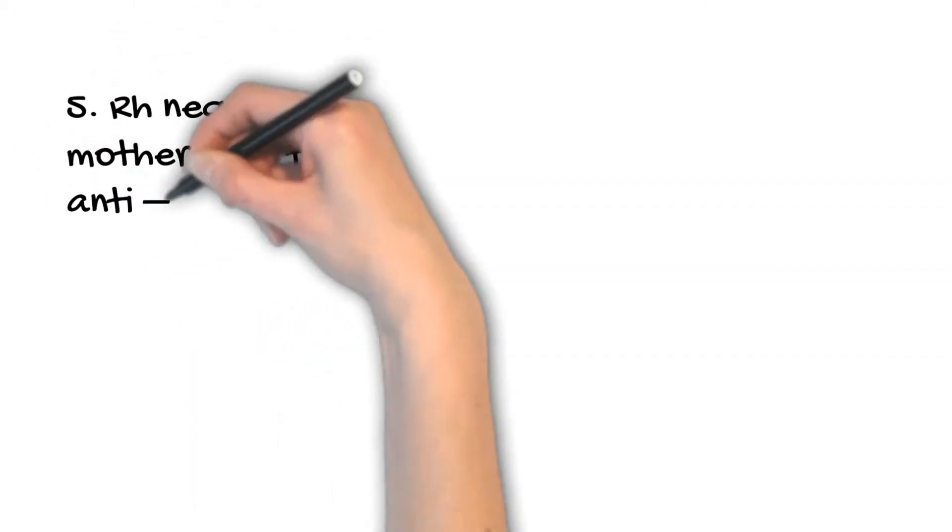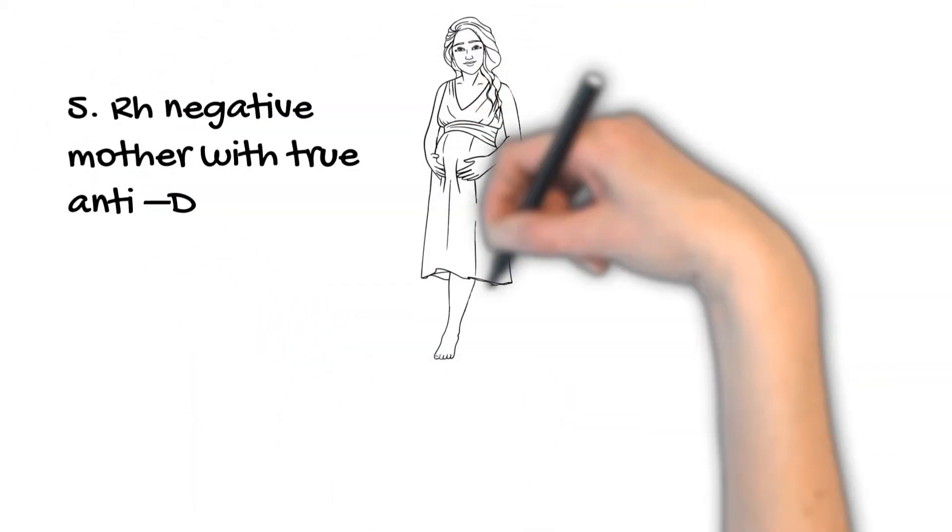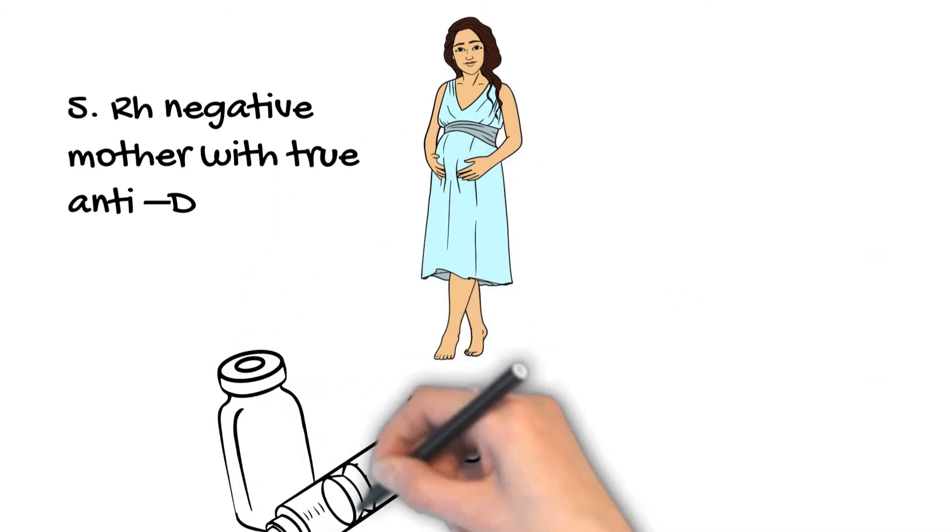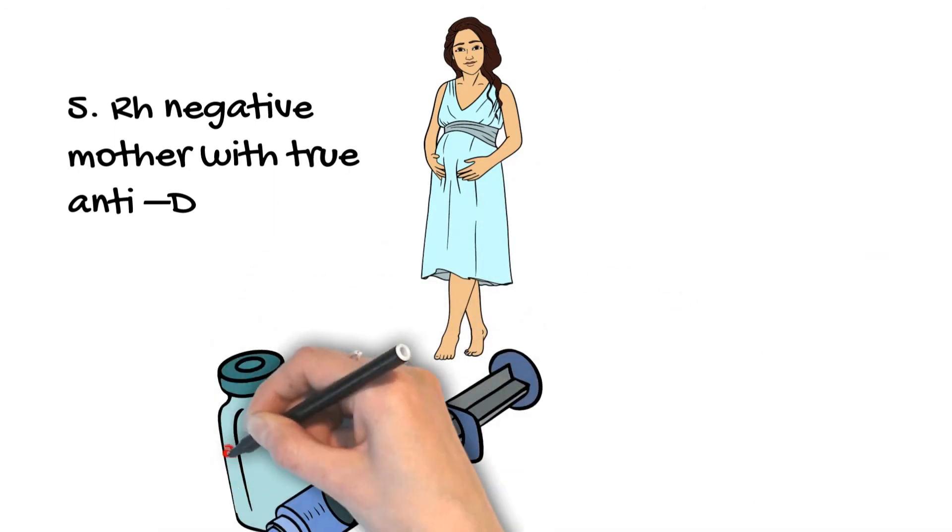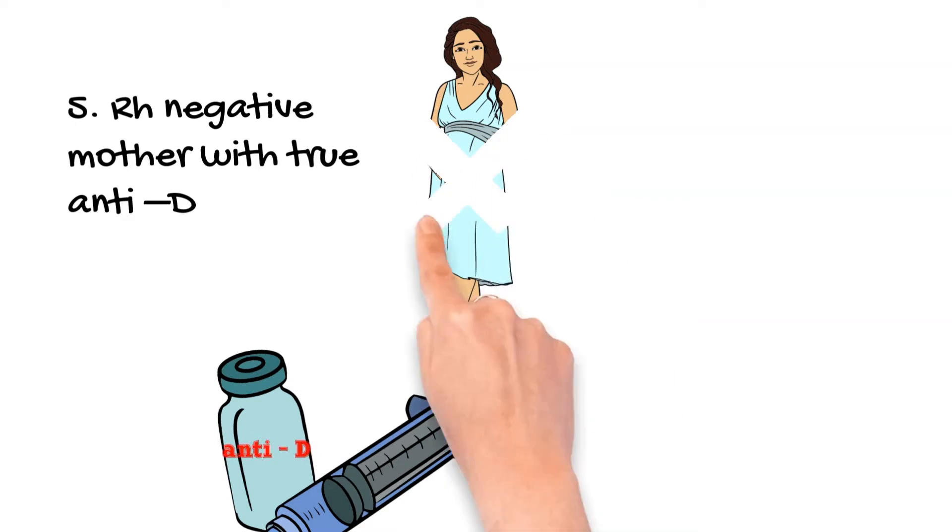RH negative mother with the true anti-D, meaning the patient has been previously exposed and sensitized, will not be given RHIG because the patient's own body is already making anti-D.